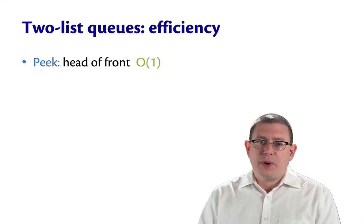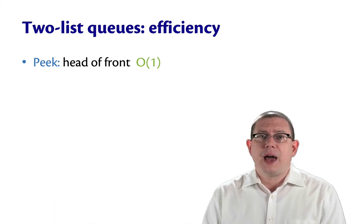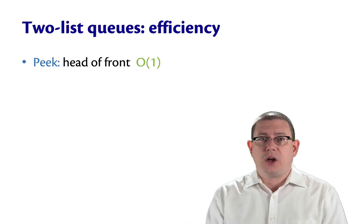So what's the efficiency of each of the operations in a two list queue? The peek operation, that was just looking at the head element of the front list. That's constant time.